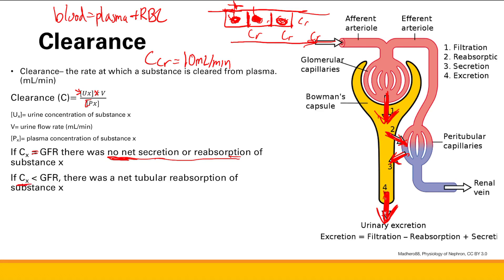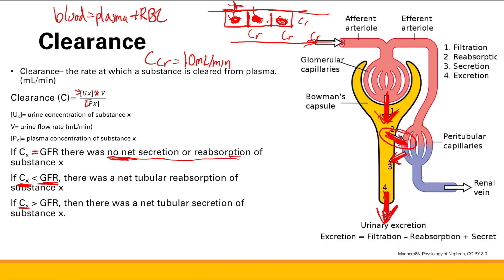If clearance or excretion is less than our filtration — the GFR — that means you must have reabsorbed some of it. There must have been net tubular reabsorption so that the amount eventually leaving is less than what was filtered. Conversely, if you are clearing more than what was actually filtered through, then you must have been secreting something.